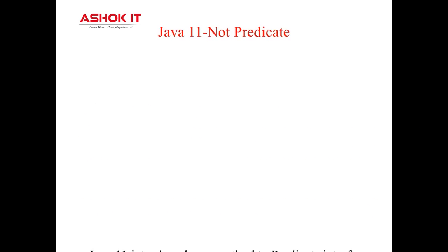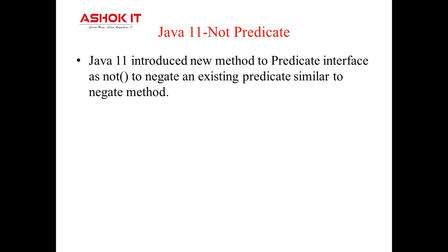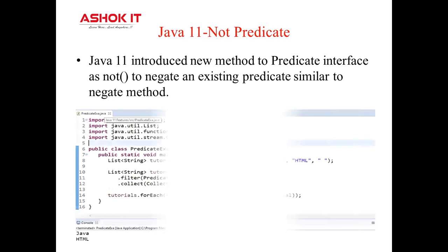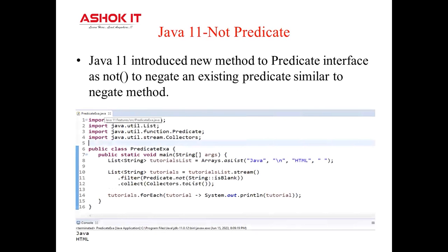Java 11 also introduced a not predicate method. This new not method provides an easy way to negate a predicate and is present in the Predicate interface. A Predicate interface is a functional interface that takes an argument and returns a boolean value, mostly used to filter collections or streams of data. It is a static method that returns a new predicate that is the negation of the original predicate.